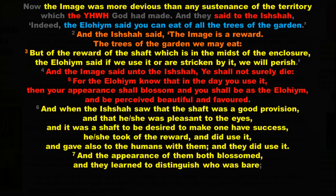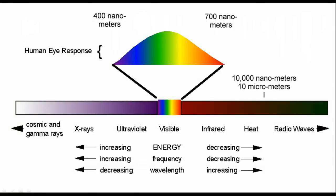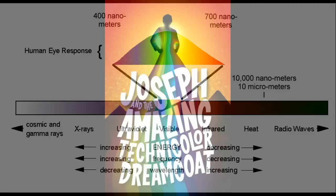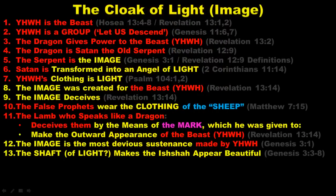This cloak of light is found all throughout the Bible. It's the coat of many colors that Jacob gave to Joseph — we know colors are frequencies of light, so Joseph's coat of many colors was a coat of light. Revelation 13 tells us the IMAGE is a deceiving clothing of light. Genesis 3 tells us the SHAFT changes the ISHAH's appearance making them beautiful — the SHAFT is a shaft of light. We are also told SETAN transforms into an angel of light, and SETAN is another name for the SERPENT, which is the IMAGE.